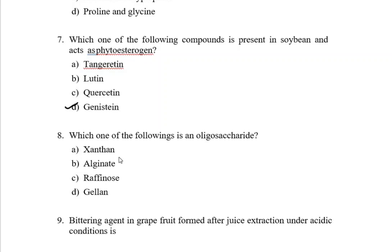Option A is xanthan, option B is alginate, option C is raffinose, and option D is gellan. Xanthan, alginate, and gellan are examples of polysaccharides where more than 10 monosaccharides are there. But raffinose—in raffinose only three monomers of monosaccharides are there, so these fall under the category oligosaccharides. You should know the three names of those monosaccharides: galactose, glucose, and fructose.